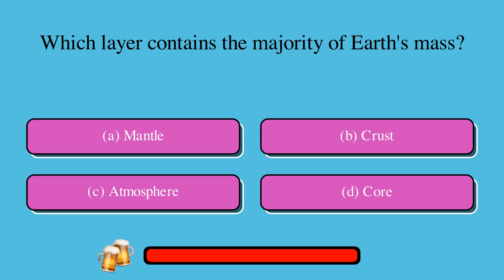Which layer contains the majority of Earth's mass? A. Mantle, or B. Crust, or C. Atmosphere, or D. Core? The correct answer is A. Mantle.